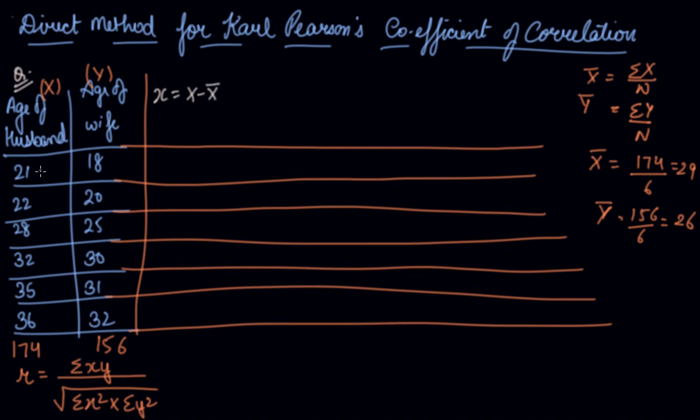21 minus 29 is minus 8, 22 minus 29 is minus 7, then minus 1, then plus 3, 6, and 7.